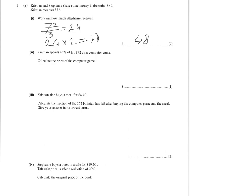Christian spends 45% of his $72 on a computer game. Calculate the price of the computer game — that's for one point, so it's a straightforward percentage question. You can do 72 divided by 100 to find 1%, then times 45. In the calculator: 72 divided by 100 equals, times 45 — that gives $32.40.